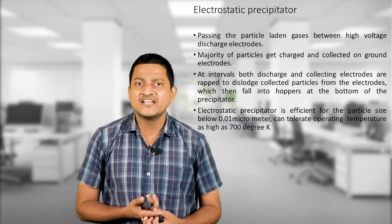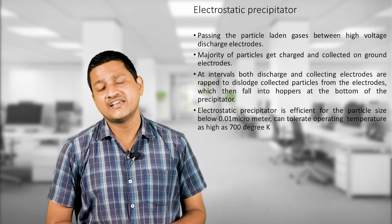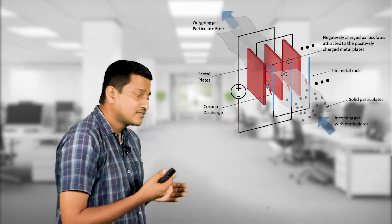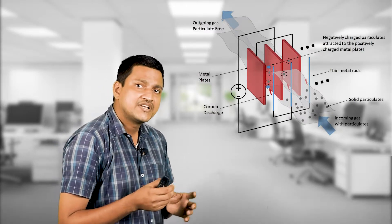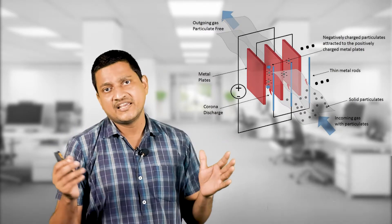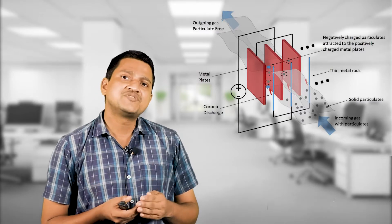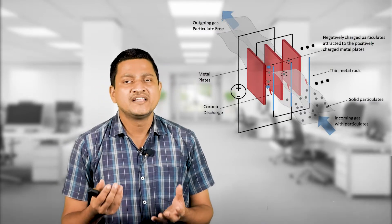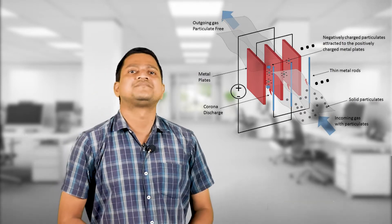The electrostatic precipitator can tolerate operating temperatures as high as 700 degrees Kelvin. Looking at the pictures, electrodes are present, and the gaseous substance is passed between them. Due to the electric charge, the particulate matter settles down onto the collector electrode.